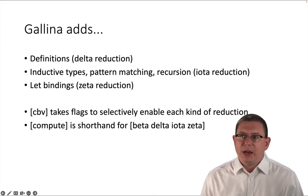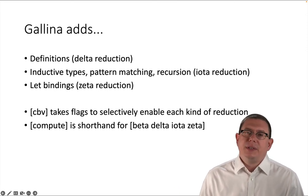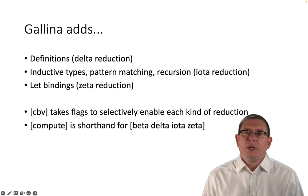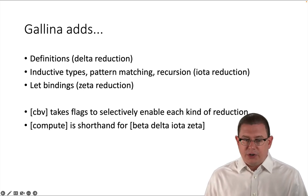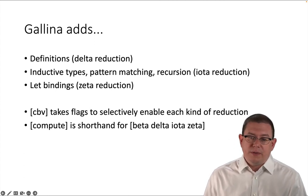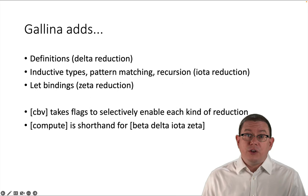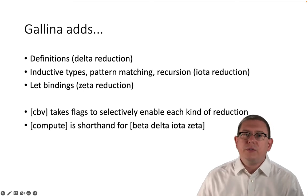And finally, let bindings. Now we haven't talked about these. If you happen to know about them from other functional programming languages, you can say, let some name equal some other expression. We'll eventually come across this in software foundations as well. But these are called zeta reductions. Let's not dig deeply into those right now. As it turns out, the CBV tactic takes flags that can selectively enable each of these kinds of reductions. The compute vernacular command, in fact, does a CBV with all of the reductions enabled. So it's doing beta, delta, iota, and zeta all together.